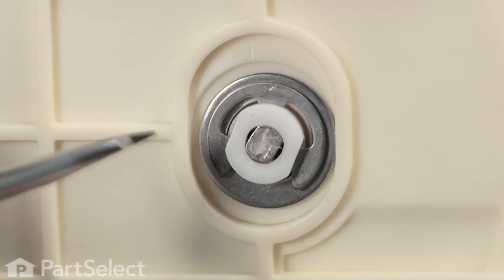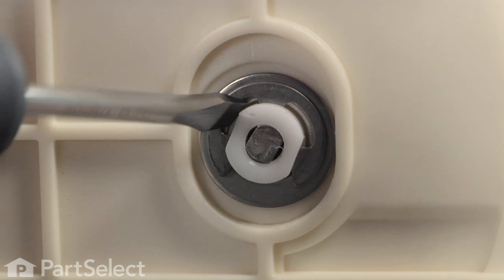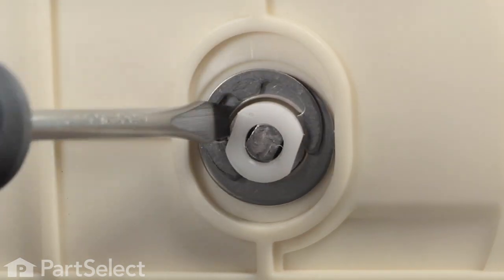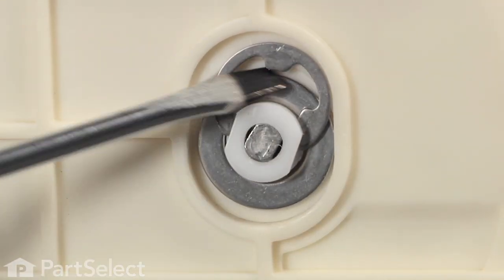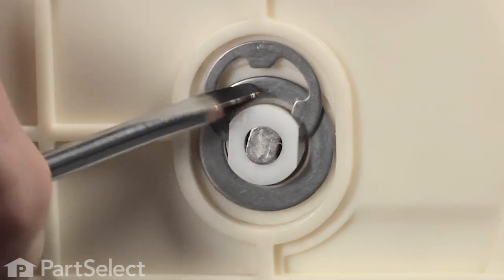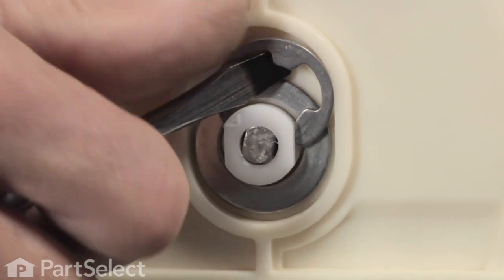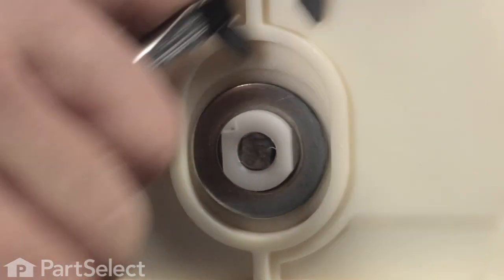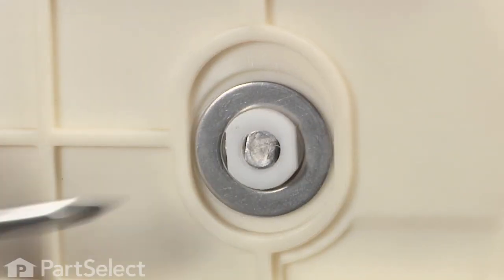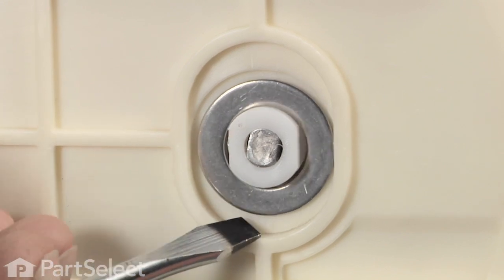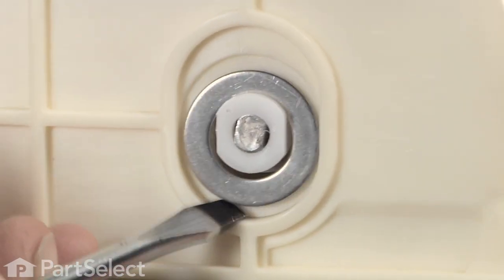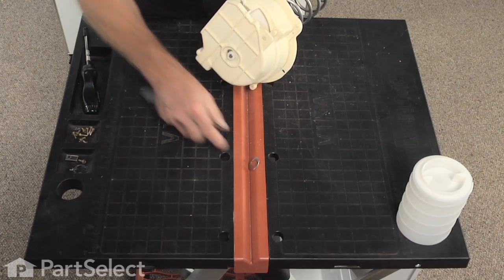Next we'll remove the E-ring from the end of the auger shaft using a flat blade screwdriver. Slide it out of its groove, put that aside, and also remove the large flat washer as well.